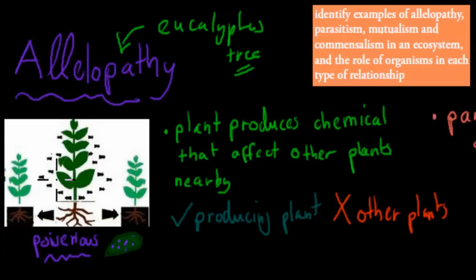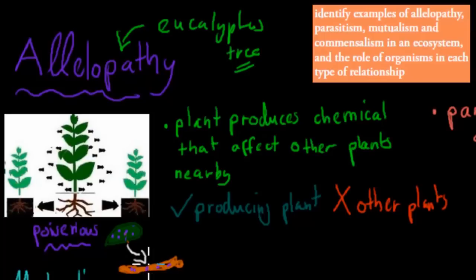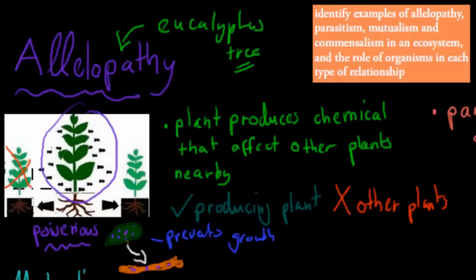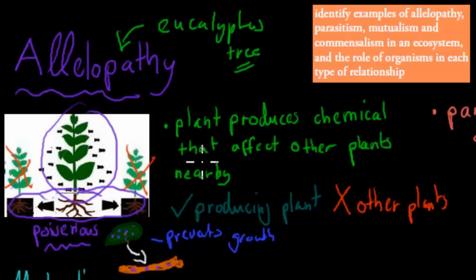Once the leaf drops and goes into the soil — I'll draw the soil here in brown — it will decompose and put these poison dots into the soil. This might wash away because of rain or it might stay there. But what this does is it prevents the growth of different plants, or it can actually kill different plants around it. So you have the eucalyptus tree producing this poison, killing off or preventing different plants from growing around it.